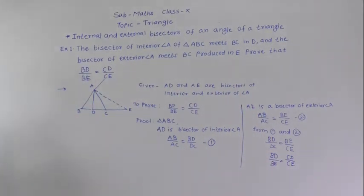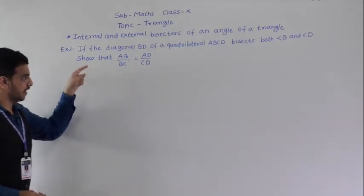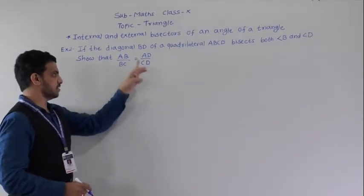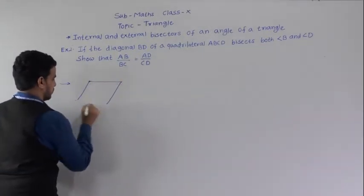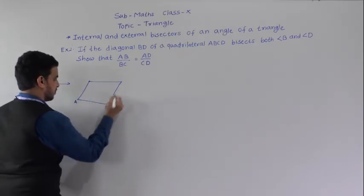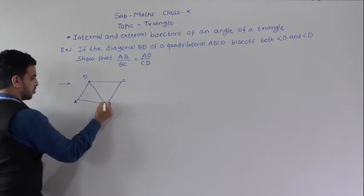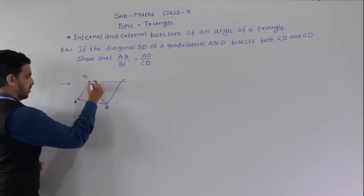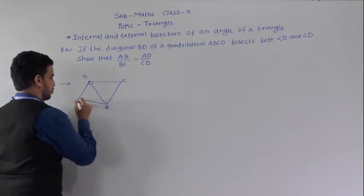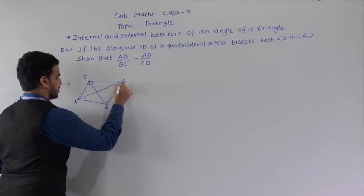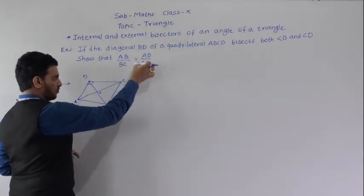Now we will see the second example. The diagonal BD of quadrilateral ABCD bisects both angle B and angle D. We have to prove that AB/BC is equal to AD/CD. First we draw the diagram of quadrilateral ABCD with diagonal BD bisecting angles B and D.